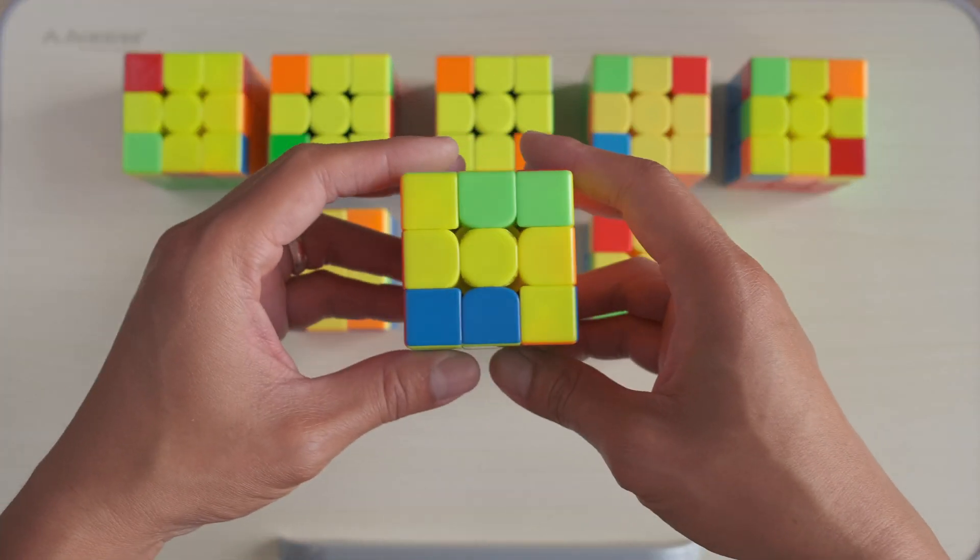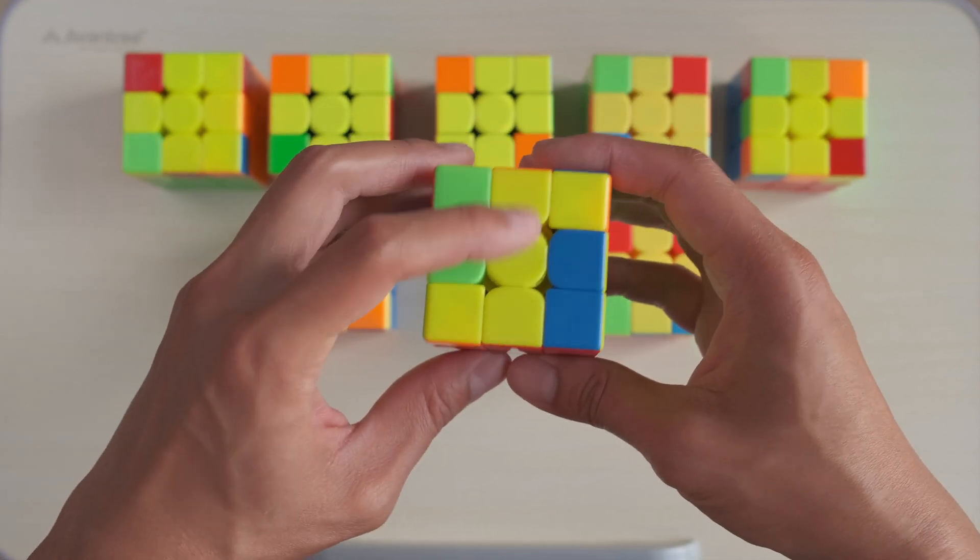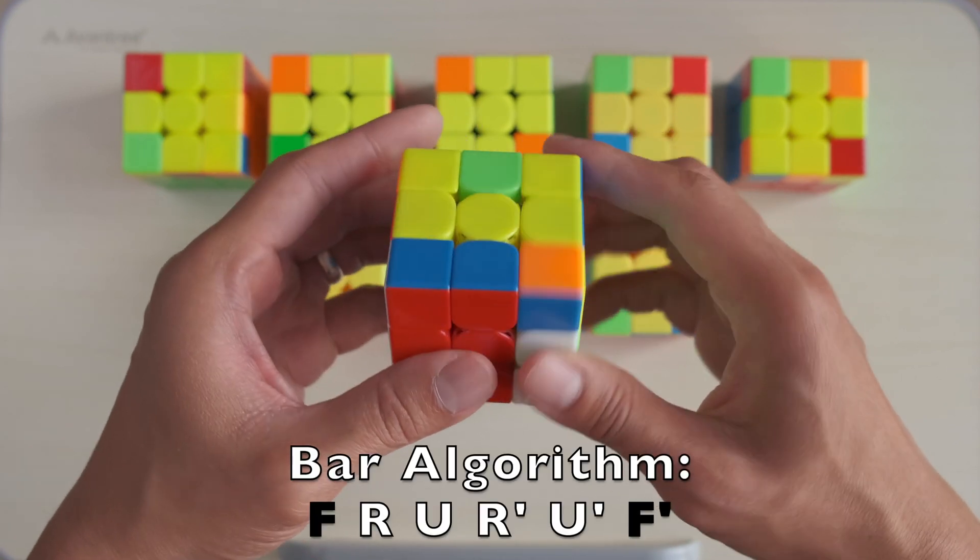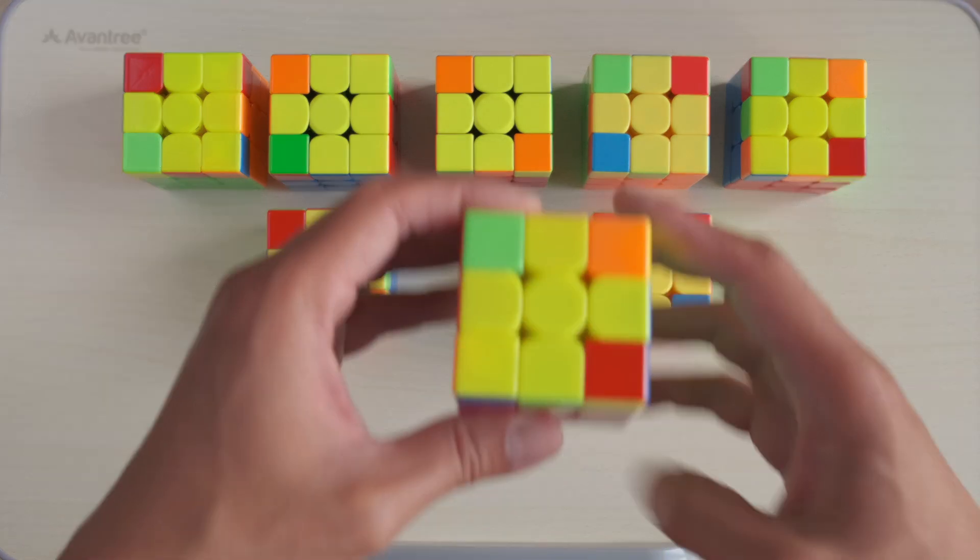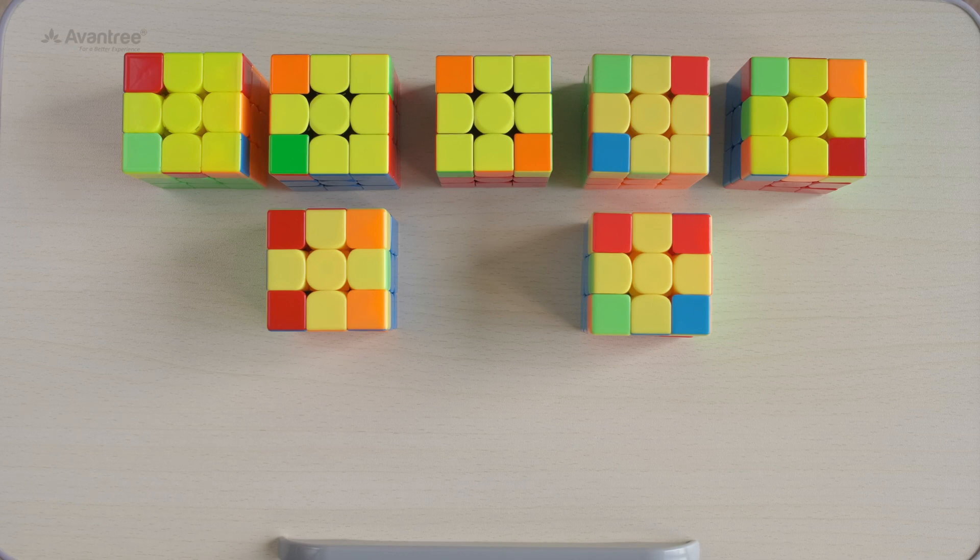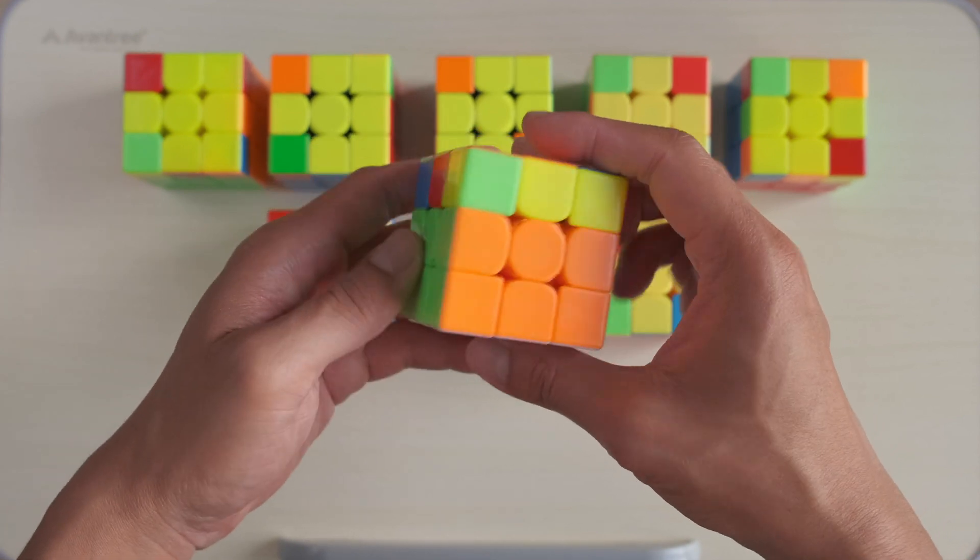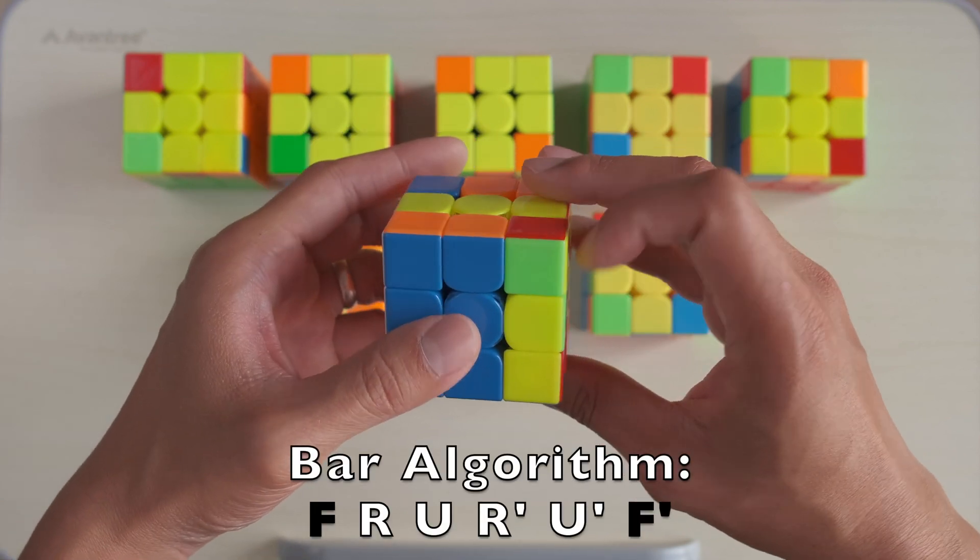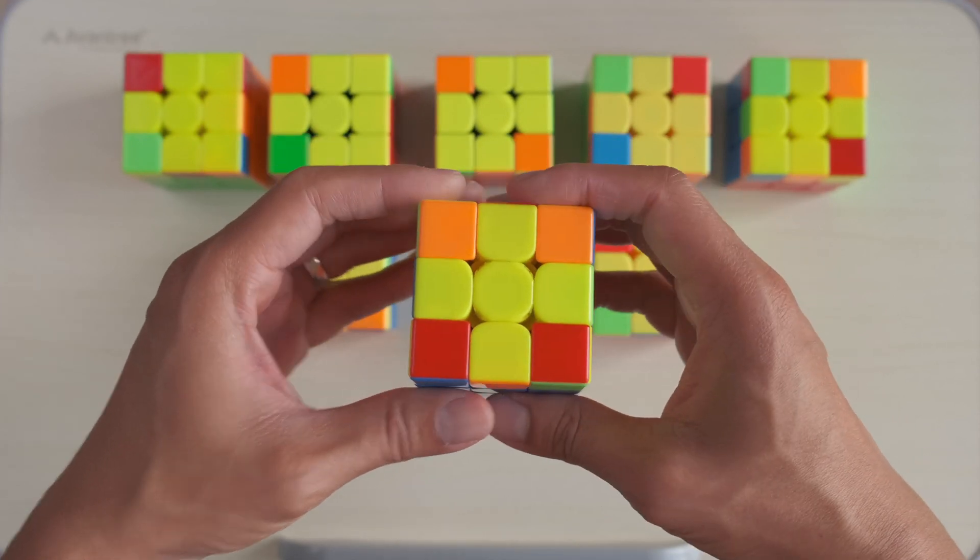Here we have another bar pattern. We know this because we only have 2 edge pieces in place. Again, we need to make sure we hold the bar horizontal to start the algorithm: F, R, U, R', U', F'. And now we have one of the patterns of the cross. Here is yet another bar pattern you may encounter. Again only 2 pieces are in place. We hold it horizontal and we do the algorithm: F, R, U, R', U', F'. Again, we see we have yet another cross pattern.